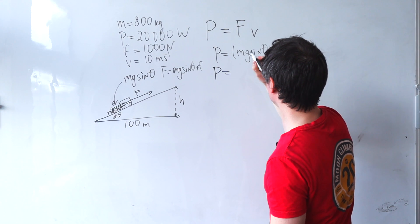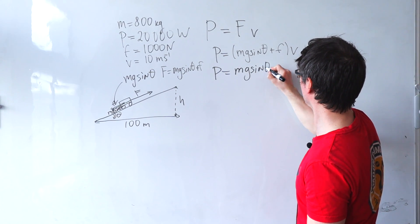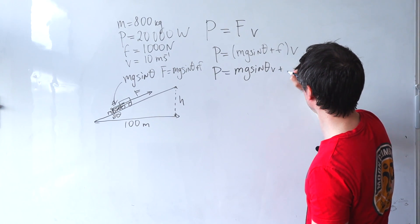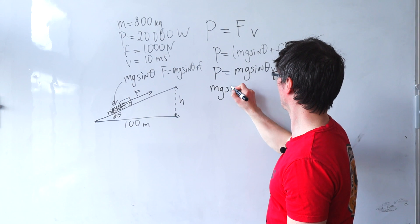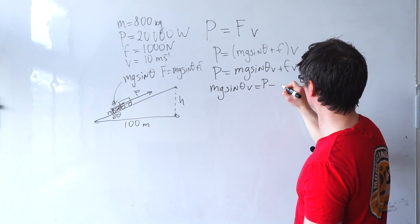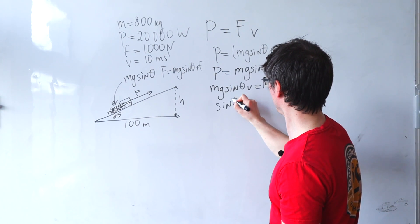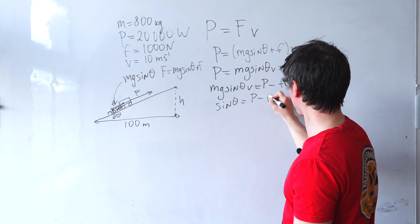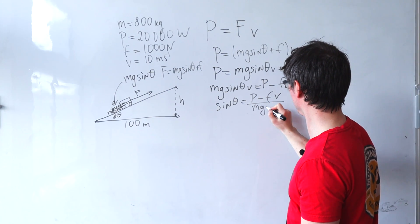We can expand things out so we get mg sine theta times v plus fv. Mg sine theta times v is equal to the power minus fv, meaning that sine theta will be the power minus fv divided by mgv.